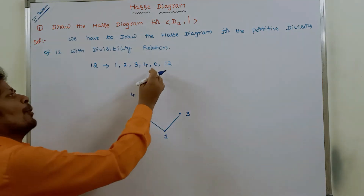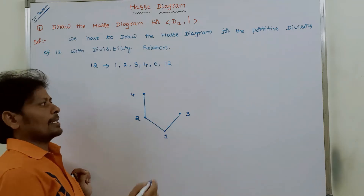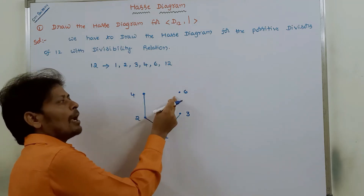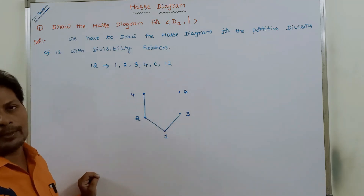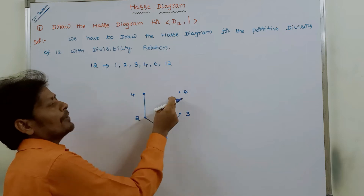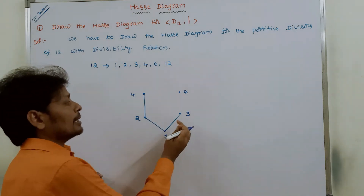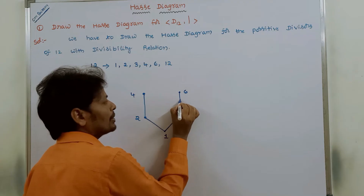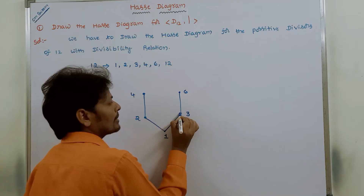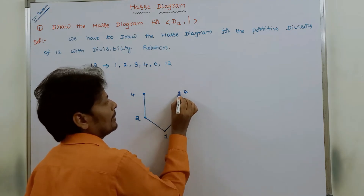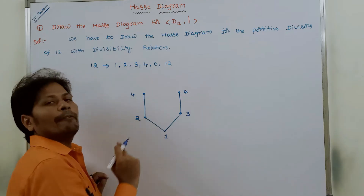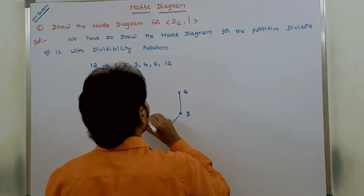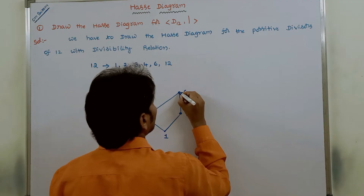The next positive divisor is 6. Since 4 does not divide 6, we do not draw an edge between 4 and 6. But 3 divides 6, so we have to draw an edge between 3 and 6. Also, 2 divides 6, so we have to draw an edge between 2 and 6.